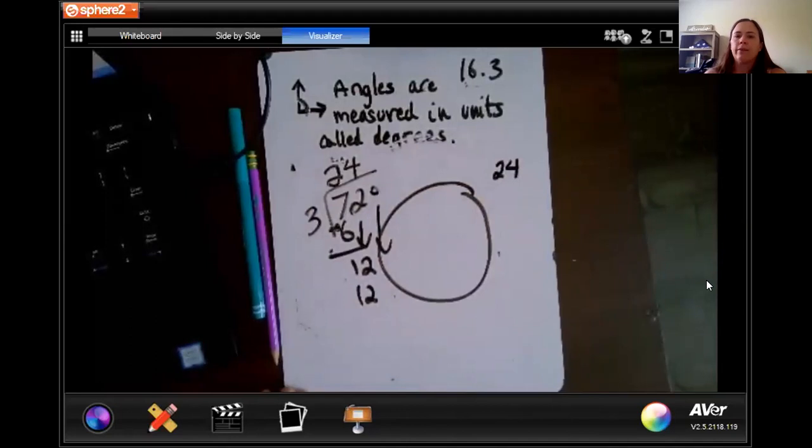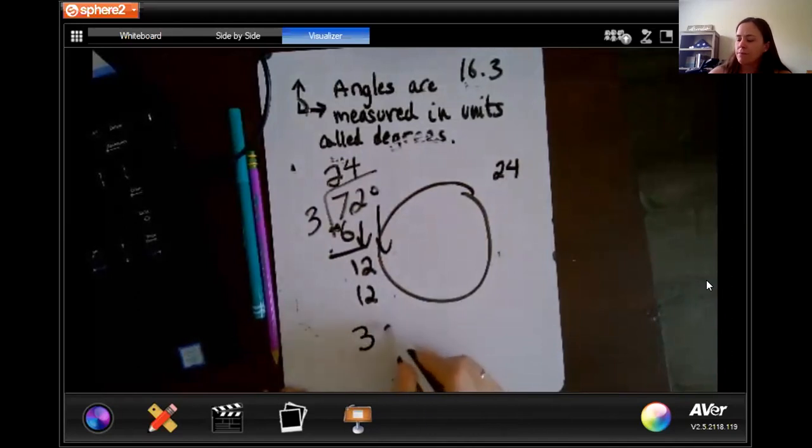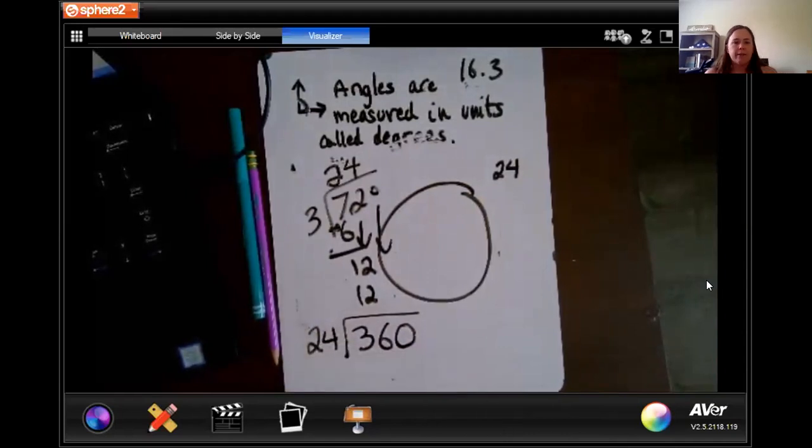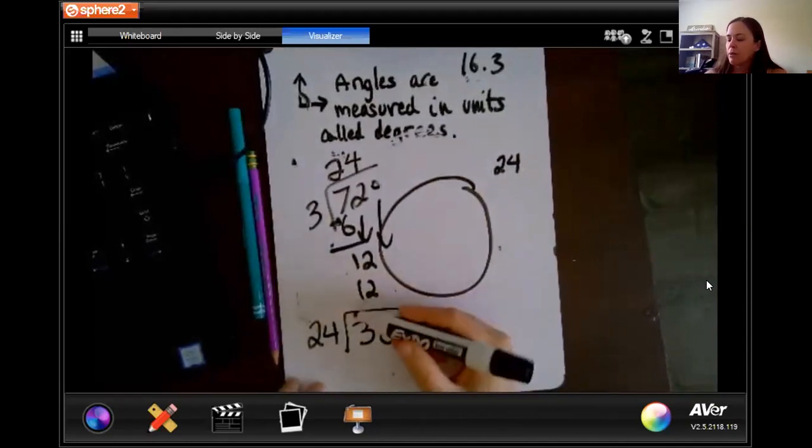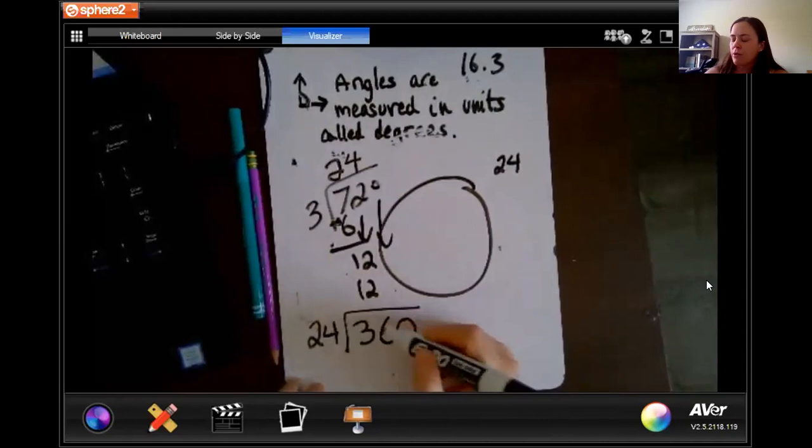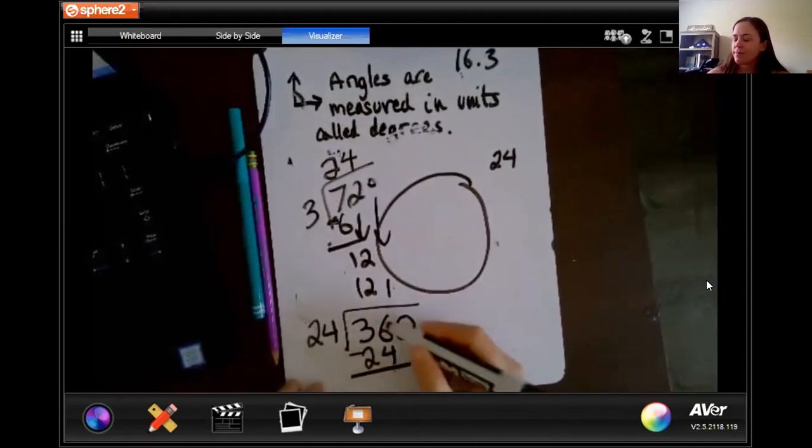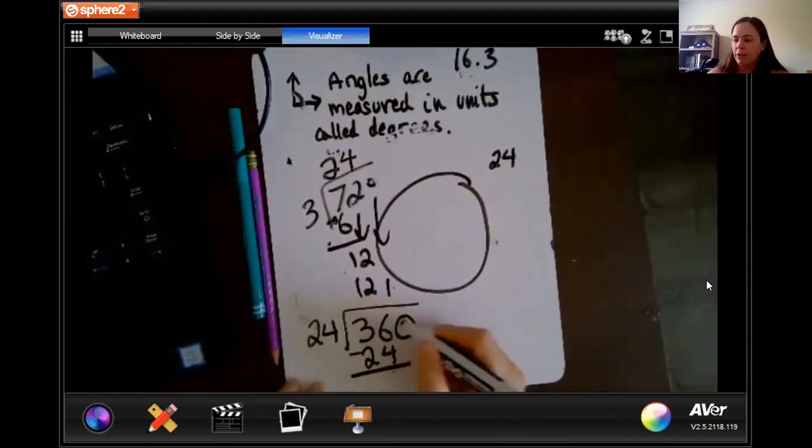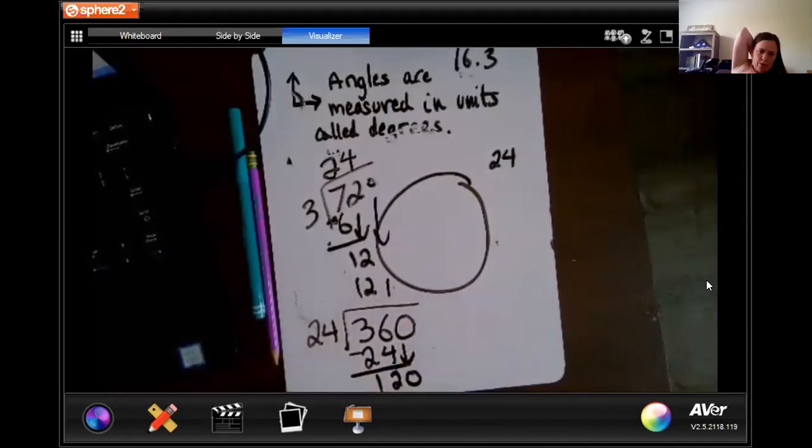Right. And a pie is 360 degrees. And this is kind of unfair because we haven't gone over this kind of division, but it's okay. We will do this together. 24 goes into 36 one time. It's the same thing. 24 goes into 120.